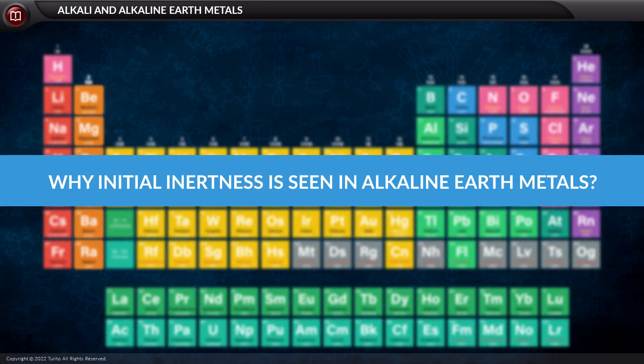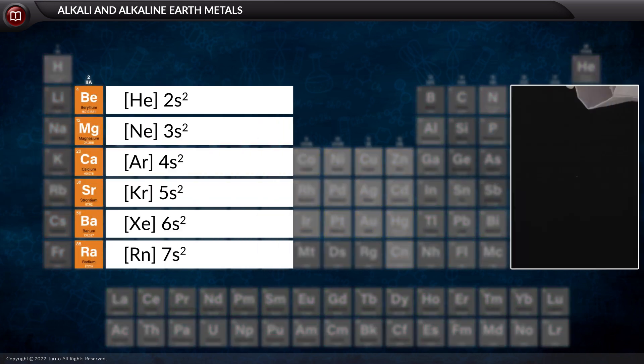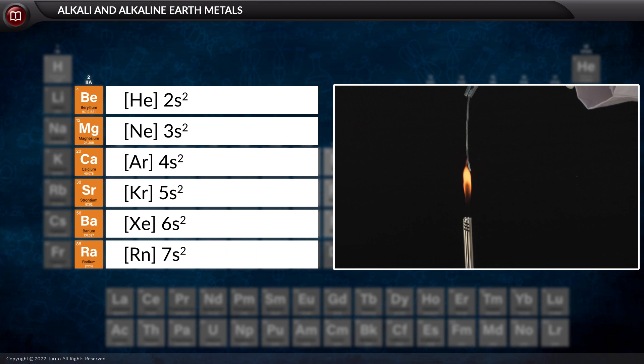Have you observed that there is an initial inertness in the alkaline earth metals? Why is it so? Well, the initial inertness of alkaline earth metals is due to the presence of two electrons in the outermost shell. The fulfilled s subshell electronic configuration gives stability.